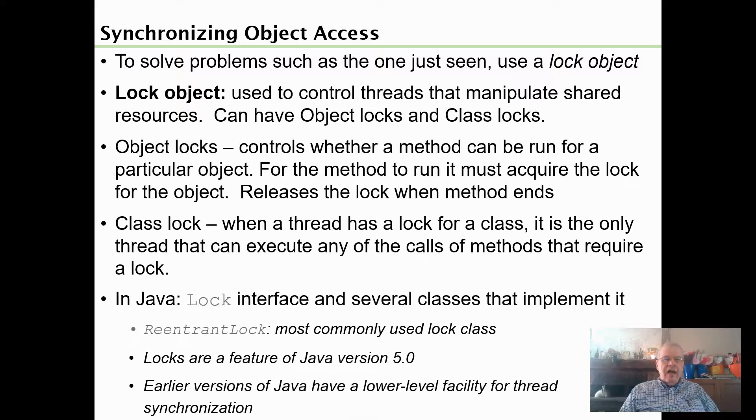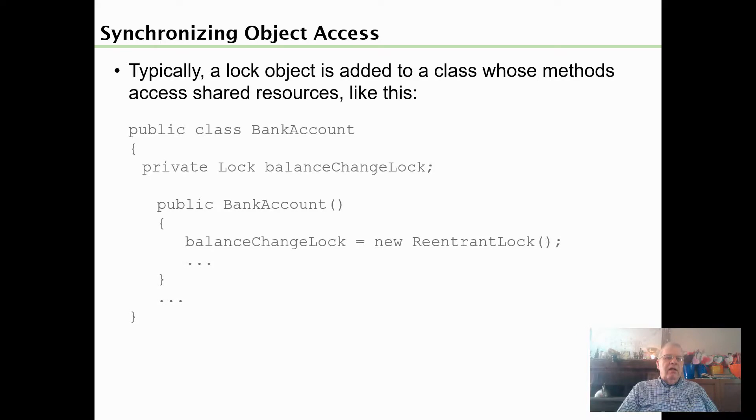In Java, you have an interface called Lock and a class, the most commonly used one, is ReentrantLock. I don't know what reentrant stands for, but that's the name of the class. ReentrantLock implements Lock, and that's what we use generally to lock an object. How do we do that? First of all, we typically add it to the class whose method accesses shared resources. If bank account calls deposit and withdraw, we could create a variable called balanceChangeLock and we name it so that we can understand what it meant. It is an instance of Lock. When we create balanceChangeLock, we create it as a ReentrantLock because Lock itself is an interface.